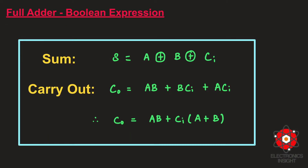For the pass transistor logic based full adder implementation we are going to concentrate purely on NMOS pass transistor implementation. Here you can see the boolean expressions for sum and carry out, which are general expressions reduced from the K-map technique. The sum expression is A XOR B XOR carry input, and the carry output expression is AB plus BCI plus ACI. We can group this and write it as AB plus CI·(A+B), and we also know that A+B is equivalent to A XOR B.